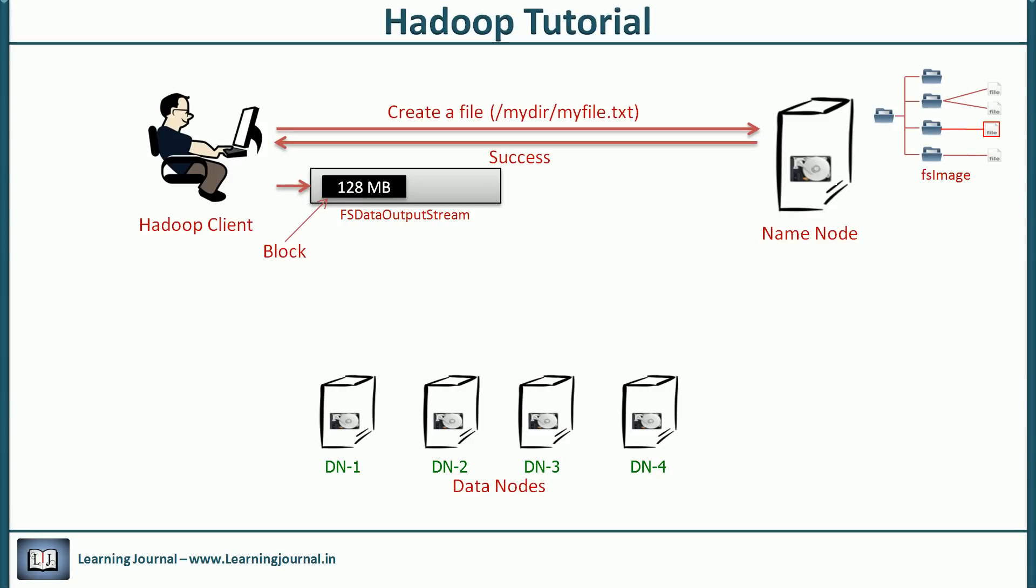So, once there is a one block of data, the streamer reaches out to name node asking for a block allocation. It is just like asking the name node that where do I store this block. The name node doesn't store data. But the name node knows the amount of free disk space at each data node. With that information, the name node can easily assign a data node to store that block.